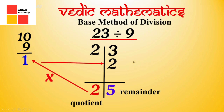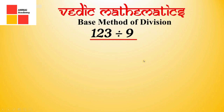So you can see how easily you got the answer to this division according to Vedic maths. Let's take another example and understand this method better. Now we have to divide 123 by 9. The base of 9 is 10, so if we do 10 minus 9, we will get 1.